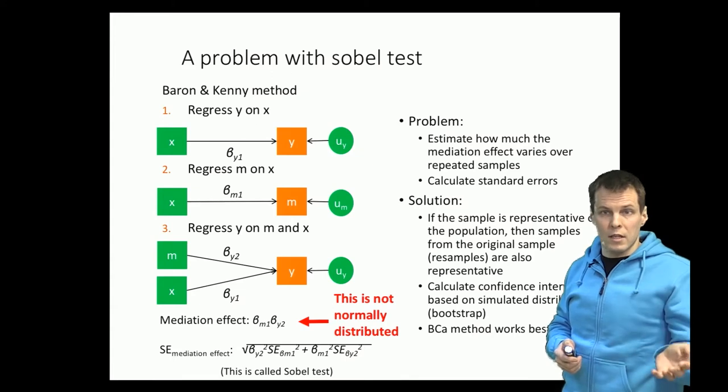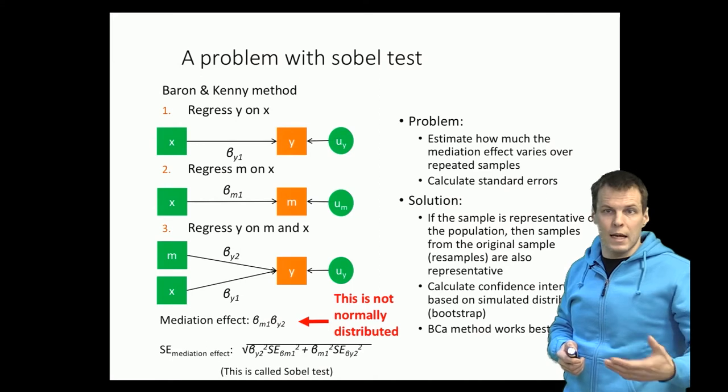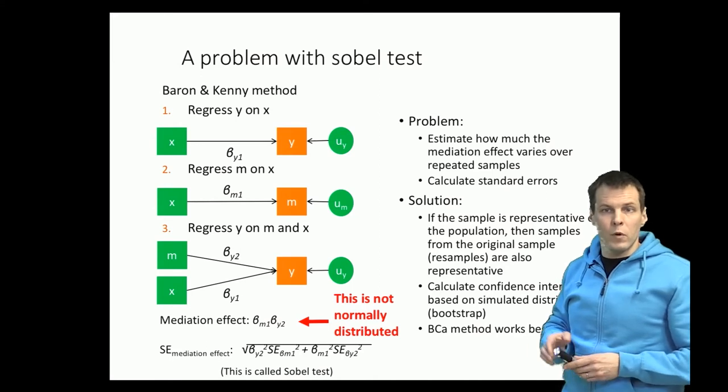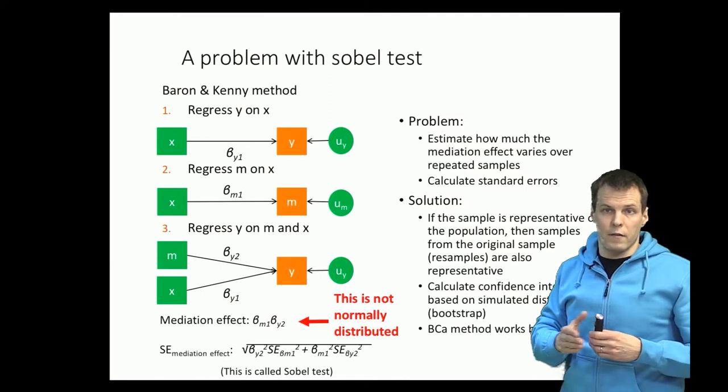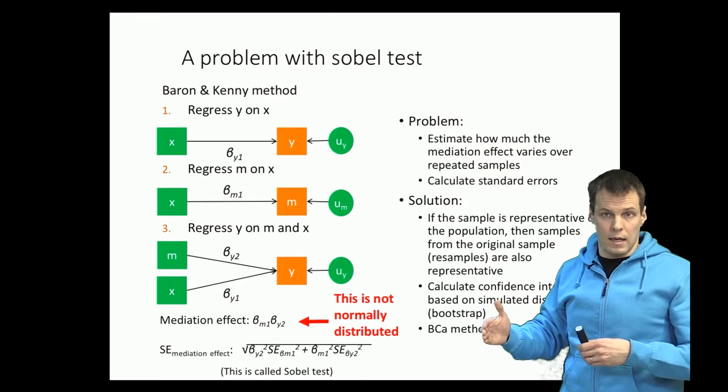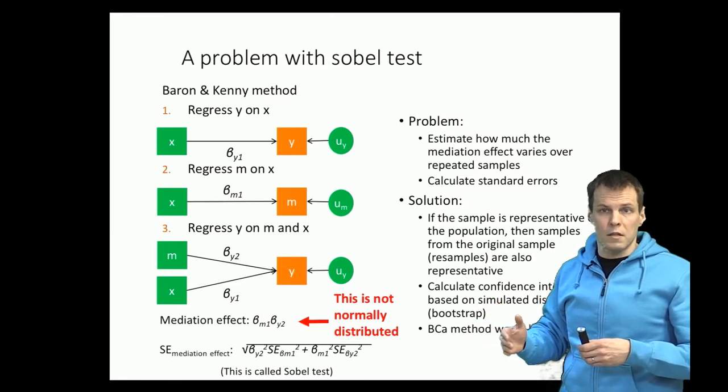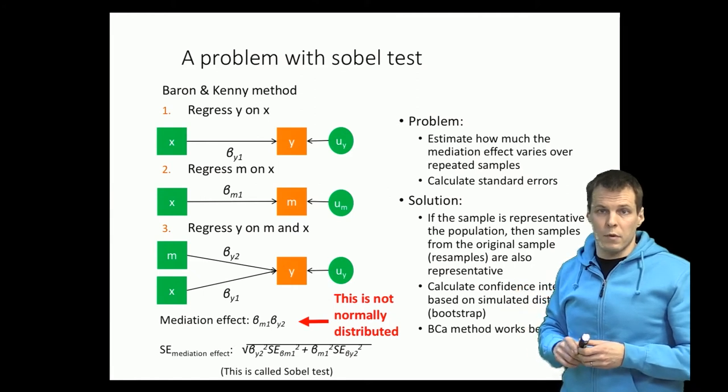So we treat our sample as the population and then we take samples from our sample. They are called resamples for that purpose. Then we take a thousand independent resamples, we check the variation or standard deviation of those samples and that will give us the standard error. That solves the standard error problem with some caveats that the sample size must be large enough.